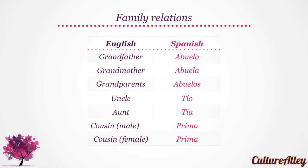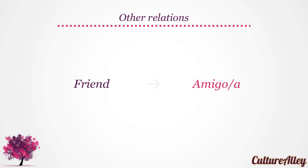Now let's look at the translations for cousin. Male cousin is primo. And female cousin becomes prima. Now that we know the key family relations, let's also look at the translation for friend. Friend translates to amigo or amiga, depending on the gender. Try saying amigo. Amigo.